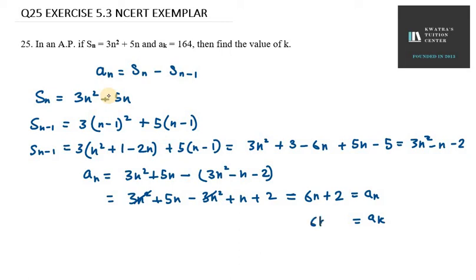So it will be 6k plus 2. Now Ak value has been given to us first, it is 164. So Ak value will be 164.